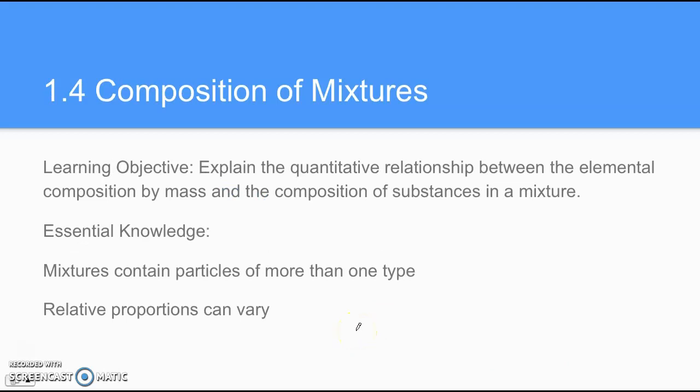Then the last part is 1.4 composition of mixtures. The learning objective here is to explain the quantitative relationship between the elemental composition by mass and the composition of substances in a mixture. The essential knowledge is mixtures contain particles of more than one type. So there could be two different compounds mixed together. But the key here is that the relative proportions can vary. So you can have different percentages of each particle that's in that mixture.